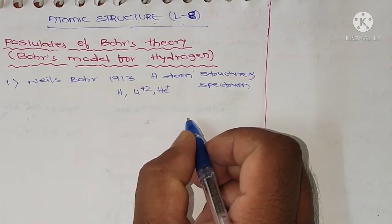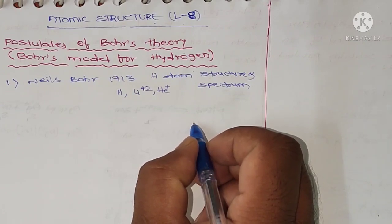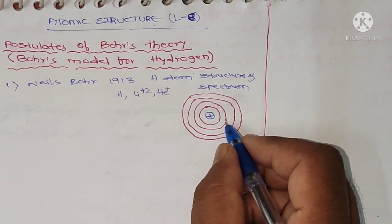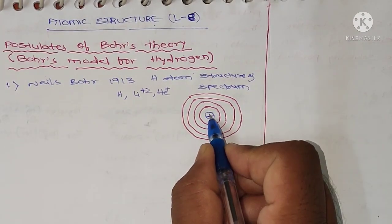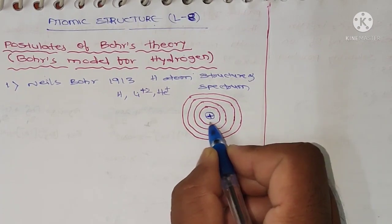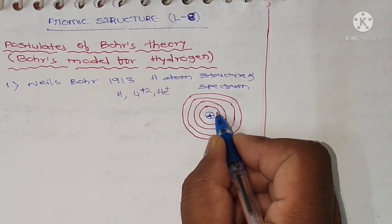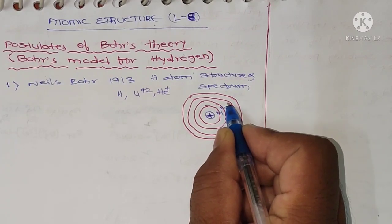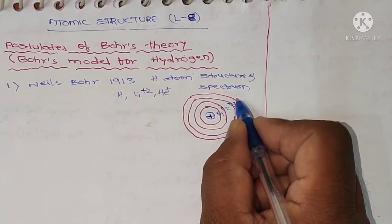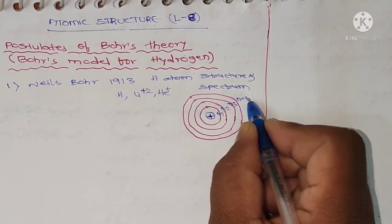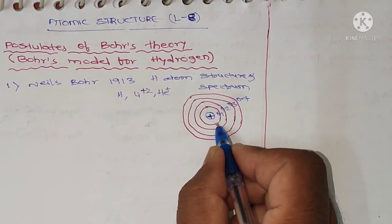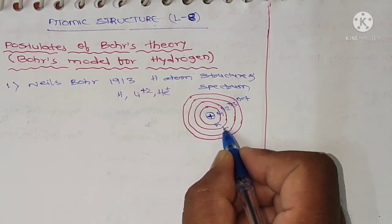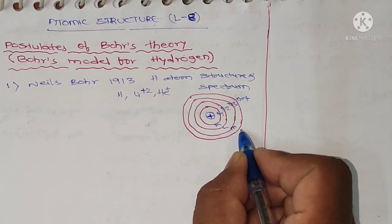Let me take the diagram for Bohr's model of hydrogen. This is the nucleus, and these are the orbits. The first orbit is N=1, the second is N=2, the third is N=3, and the fourth is N=4. These are also designated as K, L, M, and N shells respectively.